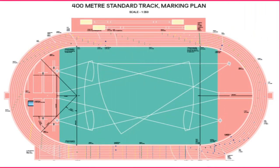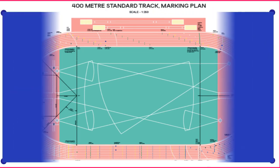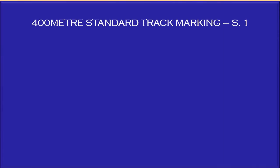Here, you are witnessing the World Athletics 400m standard track marking plan 2019. Based on this marking plan, we are explaining the 400m standard track marking procedures in this video. The 400m standard track marking has been divided into 4 stages. This is stage 1.